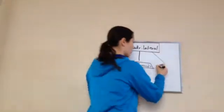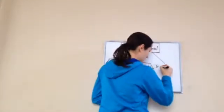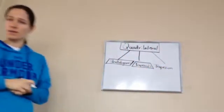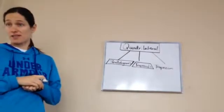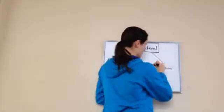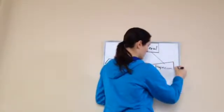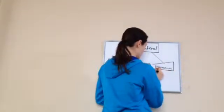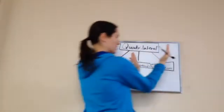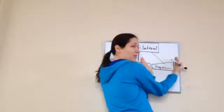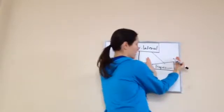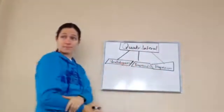And the last one is called a trapezium — kind of a weird name, but guess what it means? No parallel sides. An example of this would look like this — you could just have weird lines. None of them are parallel. These two: this one's standing up, this one's sideways. These two are not parallel, and these two are not parallel.